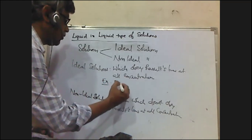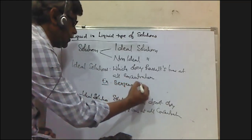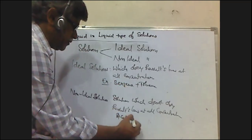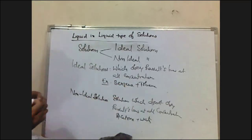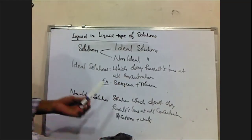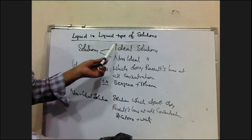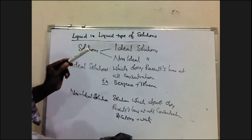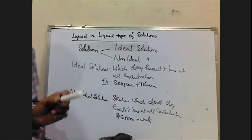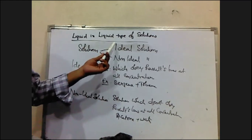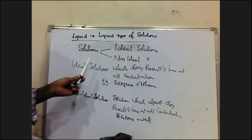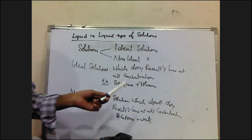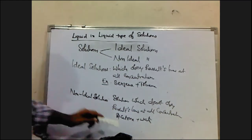From an intermediate public examination point of view, we can ask three questions: Raoult's law, what are ideal solutions with examples, and what are non-ideal solutions with examples. Ideal solutions obey Raoult's law at all concentrations; non-ideal solutions do not obey Raoult's law at all concentrations.